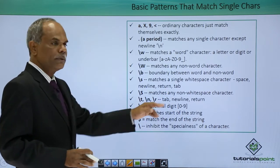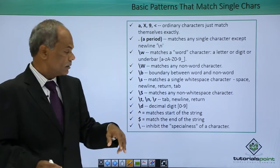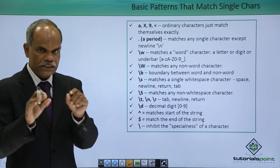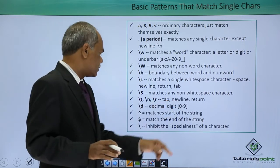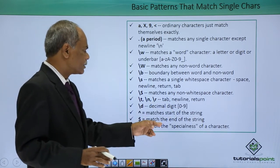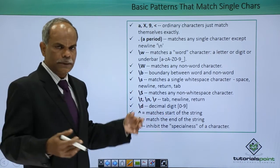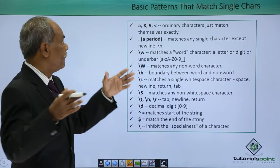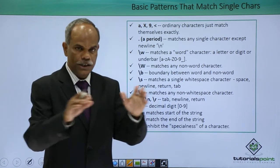\d matches a decimal digit. Caret — this is called a caret — is used to match the start of a string, if the string starts with a particular character. Dollar matches the end of the string. And backslash inhibits the specialness of the character — it is sort of an escape character. So these are all some of the basic patterns to match a single character in a given string.